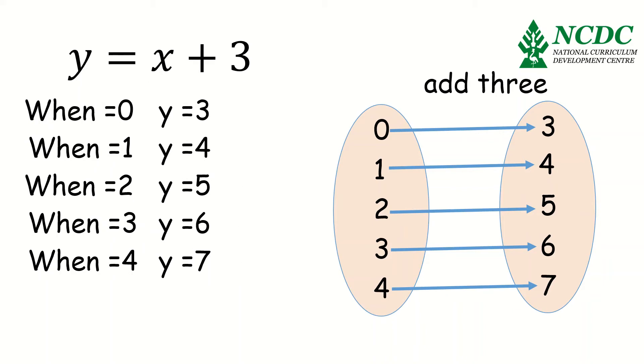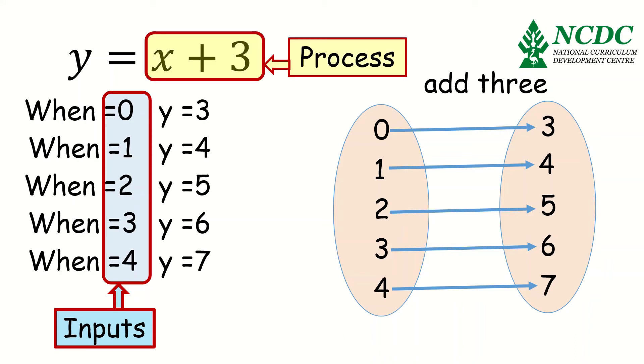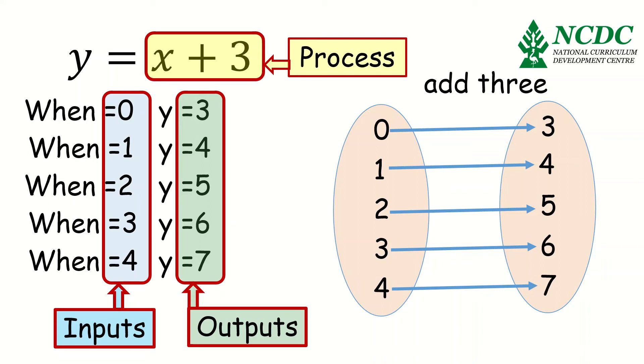Now, there is something that I need to pay attention to. And I think you should also pay attention to it. In this, we had the values 0, 1, 2, 3, 4 put in the relation statement y is equal to x plus 3. So, these values, we can call them inputs. And when you put these values in the relation, your output is the values 3, 4, 5, 6, and 7. So, those are our outputs.